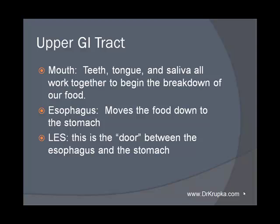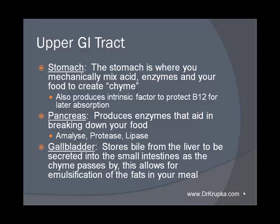The lower esophageal sphincter is a place where dysfunction occurs that many people need to be aware of. Now, in the stomach, the stomach is where you mechanically start to mix acid and enzymes with your food to create something called chyme — a nice trivial pursuit question. Chyme is that applesauce-consistency, acidic mush that comes out of our stomach when we're done digesting there. We also produce something called intrinsic factor in our stomach, which is there to protect B12 so that we can absorb it later on. Otherwise, B12 breaks down and it's unusable.